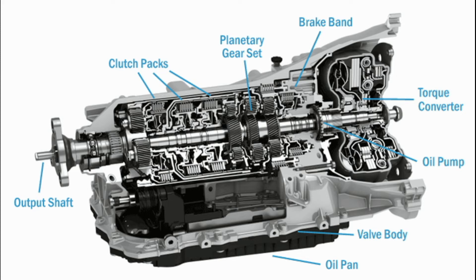5. Synchromesh devices: They are special devices used in modern synchromesh gearboxes that make the shifting of gears smooth by bringing the speed of the main shaft, lay shaft, and clutch shaft to the same level — they do not need to slide over the shaft for shifting of gear. 6. Dog clutches: They were used in old gearboxes like the constant mesh gearbox to avoid the sliding of gear over the shaft for meshing or shifting, as they slide over the shaft in order to shift a gear.